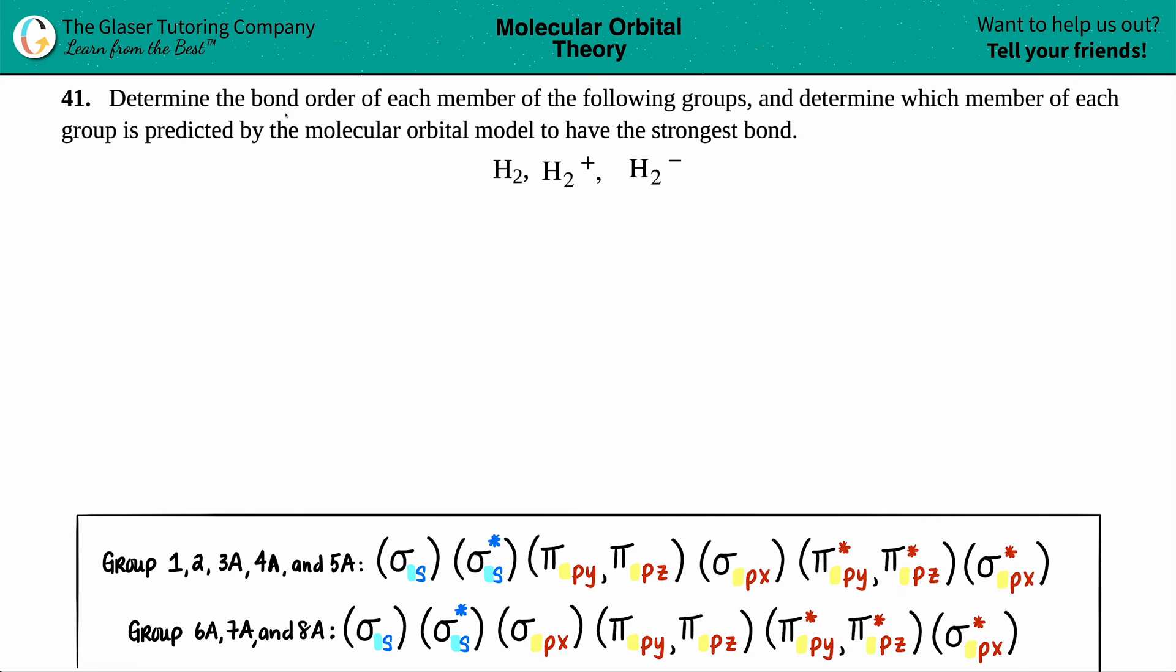Number 41. Determine the bond order of each member of the following groups and determine which member of each group is predicted by the molecular orbital model to have the strongest bond. Okay, so basically we have three diatomic atoms here: H2, H2 plus, and H2 minus. We just have to figure out what's the bond order for each of them.